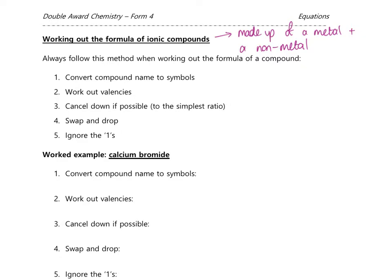The first step is to convert the compound name to symbols. Second, work out the valencies — that's what we were studying on Monday. Third, cancel down if possible to the simplest ratio. Fourth is swap and drop. Fifth is ignore the ones. It's a five-step process. We want to make sure we're doing this right from the start, because if you get the formula wrong then your equation will be totally wrong and you won't be able to balance it.